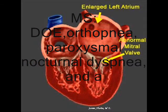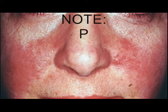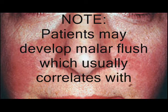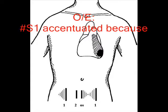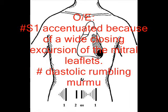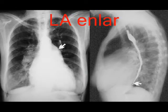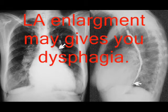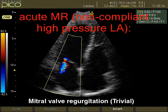The first valve we're going to study is mitral stenosis. The clinical presentation will be dyspnea on exertion, orthopnea, and atrial arrhythmia. A patient may develop a malar flush, which usually correlates with severe mitral stenosis. On examination, S1 will be accentuated, and there is a diastolic rumbling murmur which follows the opening snap. Left atrial enlargement may give a characteristic X-ray appearance.